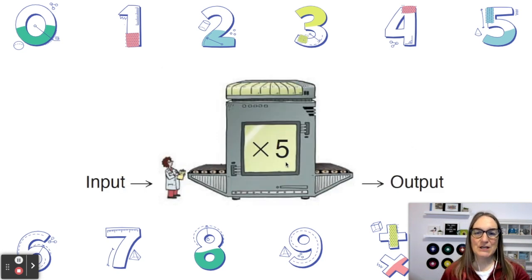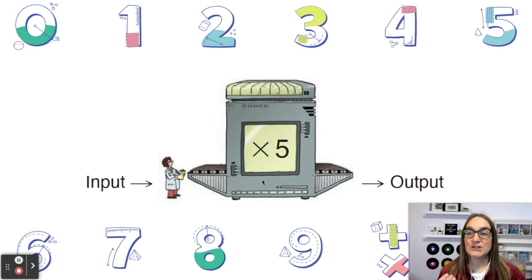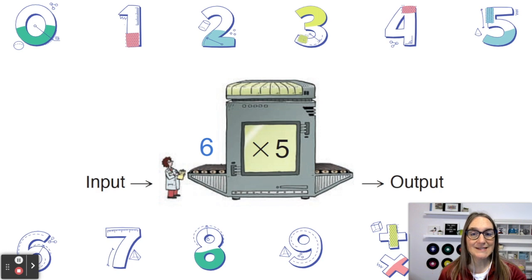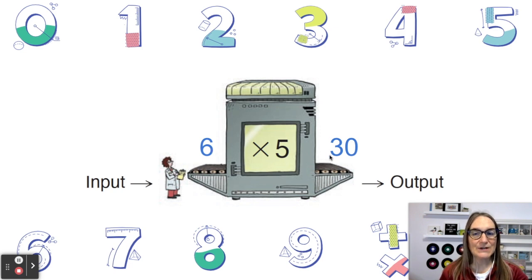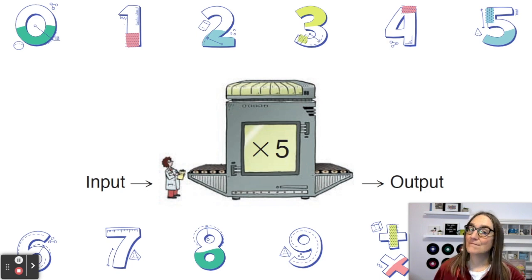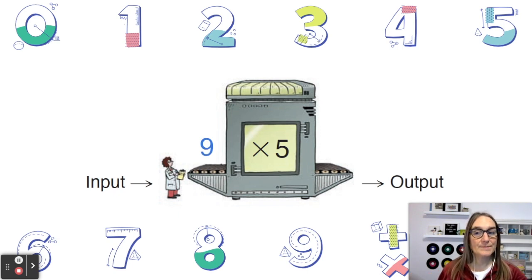Take a look at this machine here. We call it an input output machine. Any number that is put in this machine is multiplied by five. When you input six, the output is 30 because six times five equals 30. If we put a different input into this machine, let's see what will happen. Suppose we enter nine in the input. What will the output be? 45, because nine times five is 45.